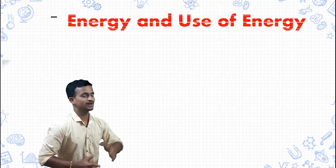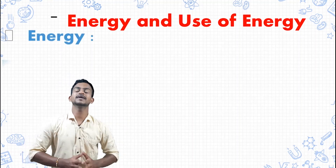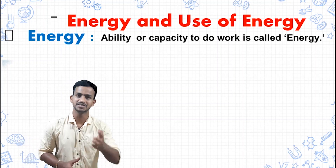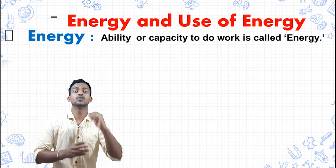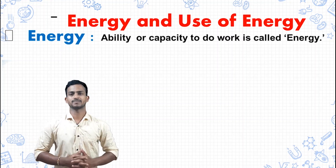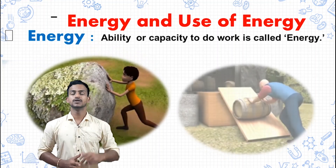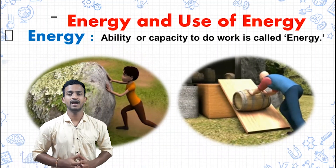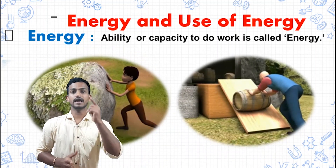We will start with energy and use of energy. Energy is the capacity to do work. If you see here in the picture, you will find that two persons are pushing the object, and the ability of these persons to push is called energy.